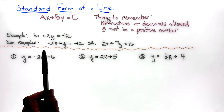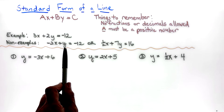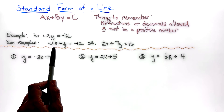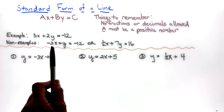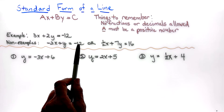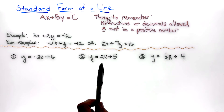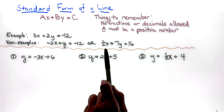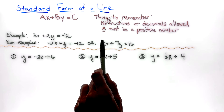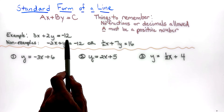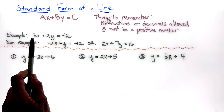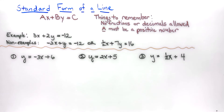Non-examples: negative 2x plus y equals negative 12 has a negative leader, so we'd have to divide everything by negative 1 to make it positive. Also, one-half x plus 7y equals 16 has a fraction, which is not allowed. When we're done we'll have an equation that looks correct in standard form.